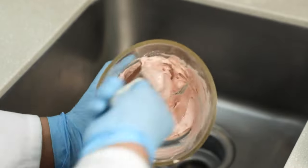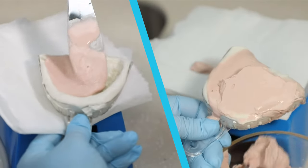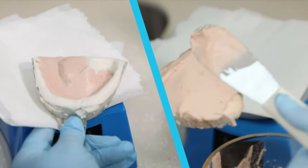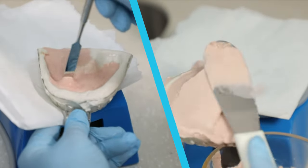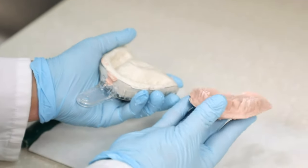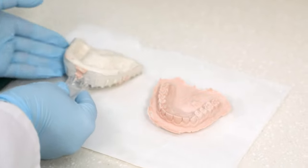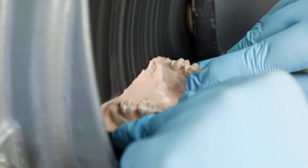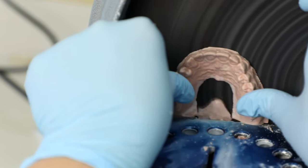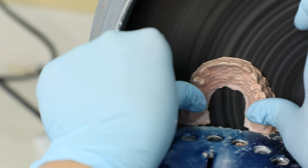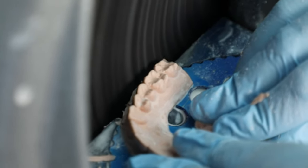Pour impression with fast-set plaster or dental stone. Pour alginate shortly after making impression to ensure accuracy. Trimming is less work if quantity of stone is kept to a minimum. Pallet and tongue areas are not poured or should be removed after plaster has set.